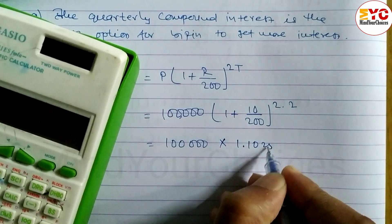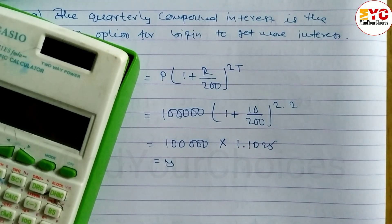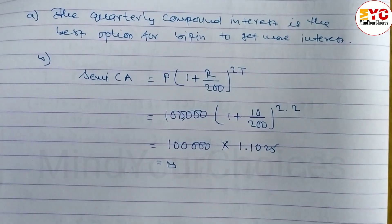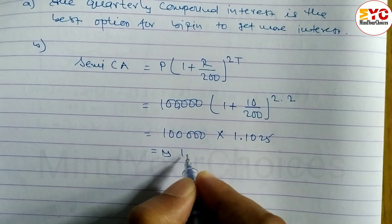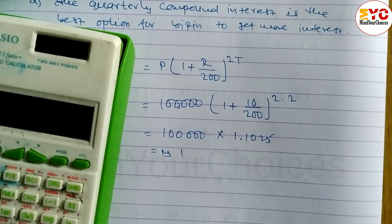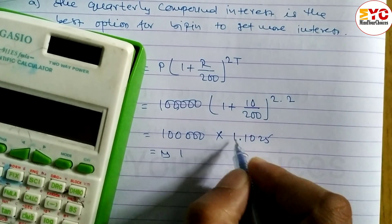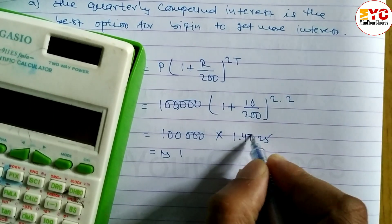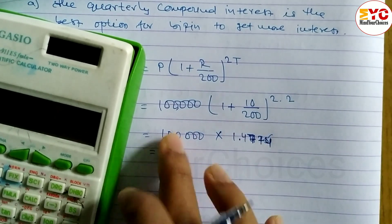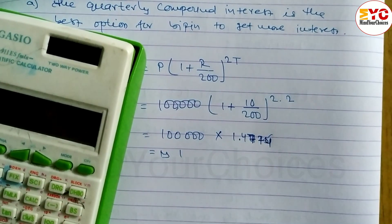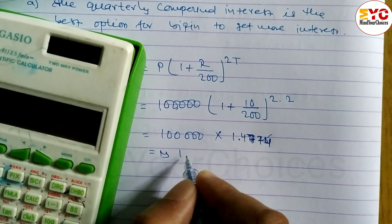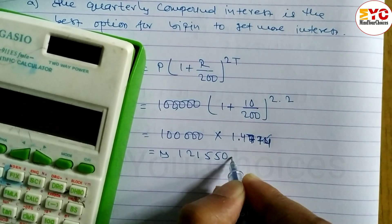Calculating step by step: 10 divided by 200 gives 0.05, plus 1 gives 1.05, raised to the power of 4. Multiplying out step by step gives us a compound amount of approximately Rs. 1,12,055.625.